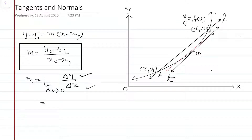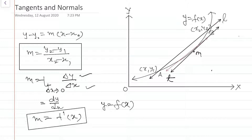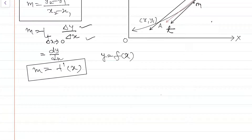The right-hand side of the above equation is nothing but the definition of the derivative dy/dx. If y = f(x), then dy/dx = f'(x). So, to find the slope of the tangent at a given point, we have to find the first derivative of the curve at that given point.